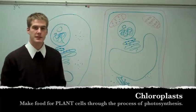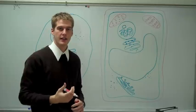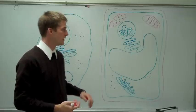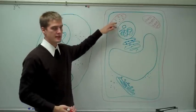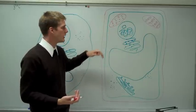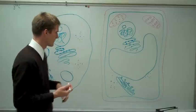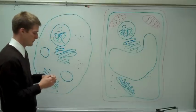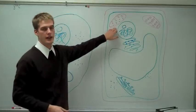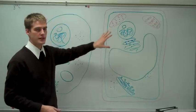The next plant-only structure is chloroplasts. Chloroplasts are responsible for producing food for a plant cell. They take in sunlight and through the process of photosynthesis they make energy — the electrons get excited and it makes food. That food then goes into the mitochondria. So we have the cell wall and the chloroplasts that are only found in plant cells.